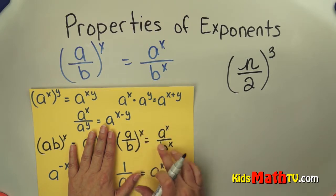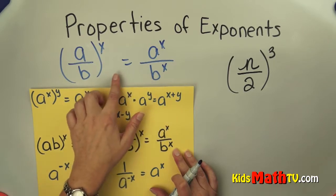a over b to the power of x is the same as or equal to a to the power of x over b to the power of x. And I've rewritten it there.